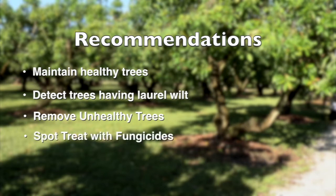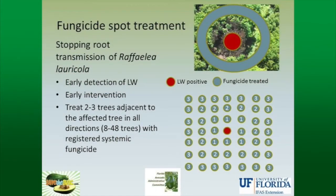In addition to sanitation, we recommend either a spot treatment or a complete grove application of fungicides. We do not have a cure — these fungicides must be applied before the tree is infected, and they must be systemic, getting inside the tree. The recommendation is to either treat all your trees, or if that's too expensive, do a spot treatment — treating two or three healthy trees on either side of a laurel wilt affected tree.